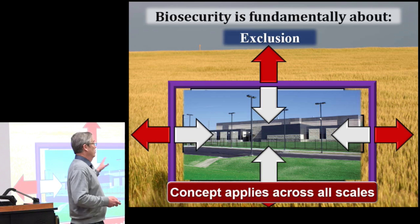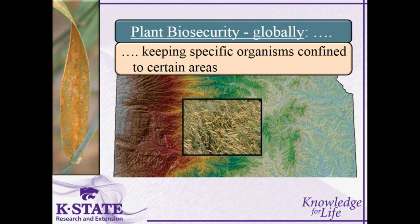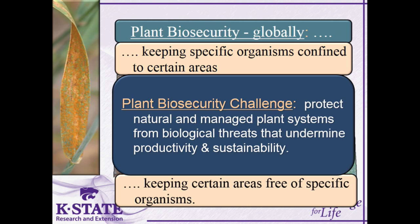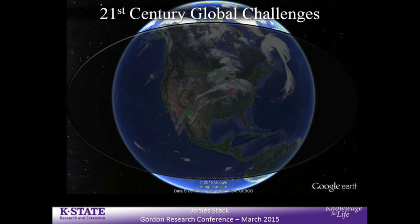The plant biosecurity challenge is to protect natural and managed plant systems from biological threats that undermine productivity and sustainability. Why does this even matter? If we look at the major challenges we're facing this century — water, food, energy, public health, climate change, biodiversity — for each one of these, plant systems contribute to both the problems and the solutions. What fossil fuels were to the 20th century, food and water will be to this century. Plant health is prerequisite to public health and human well-being, and plant health is undervalued and at increased risk.